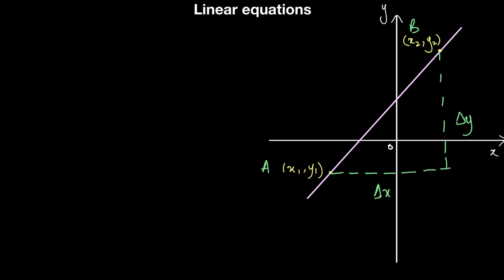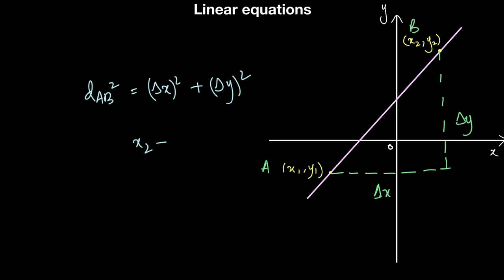The distance AB squared is the change in X squared plus the change in Y squared. The change in X can be rewritten as (x2 minus x1) the whole thing squared, and the change in Y is the difference in Y values, so (y2 minus y1) the whole thing squared. That is the distance AB, the whole thing squared.